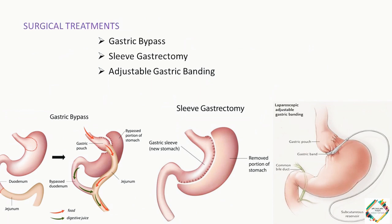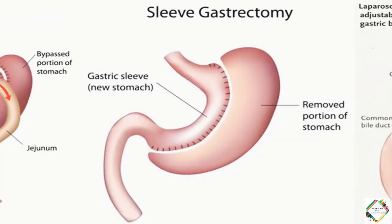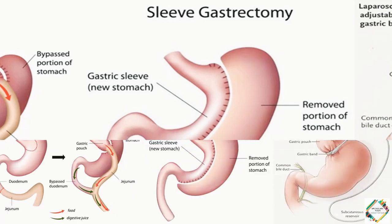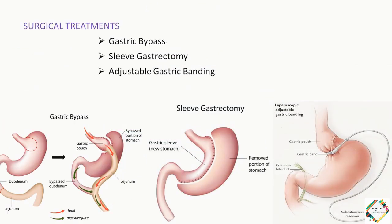Next is the sleeve gastrectomy. It is an irreversible weight loss procedure in which the stomach is divided into two partitions, creating a new stomach out of the small left part with laparoscopic surgery, also called vertical sleeve gastrectomy. Like other metabolic surgeries, it promotes weight loss by changing the hormonal signals between the stomach, brain, and liver to establish a lower set point.